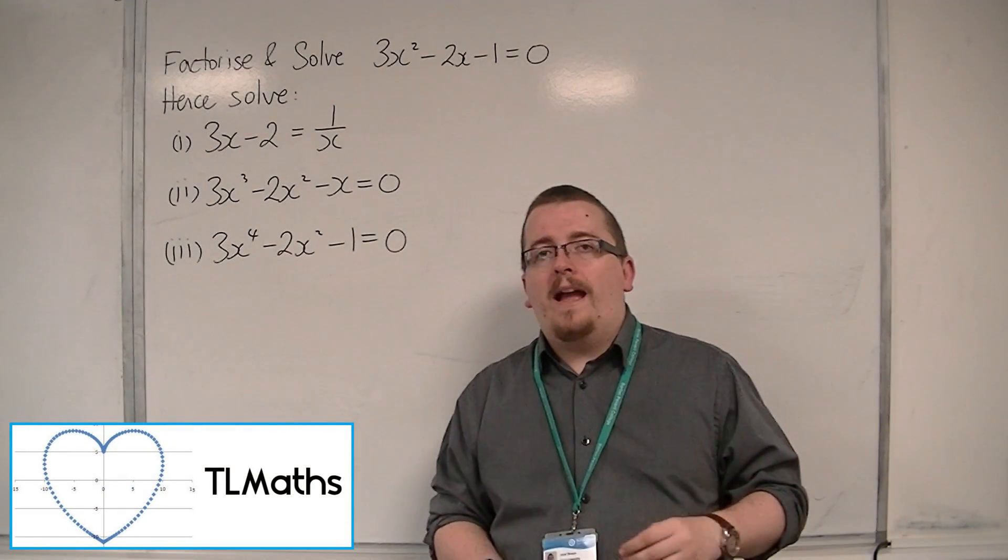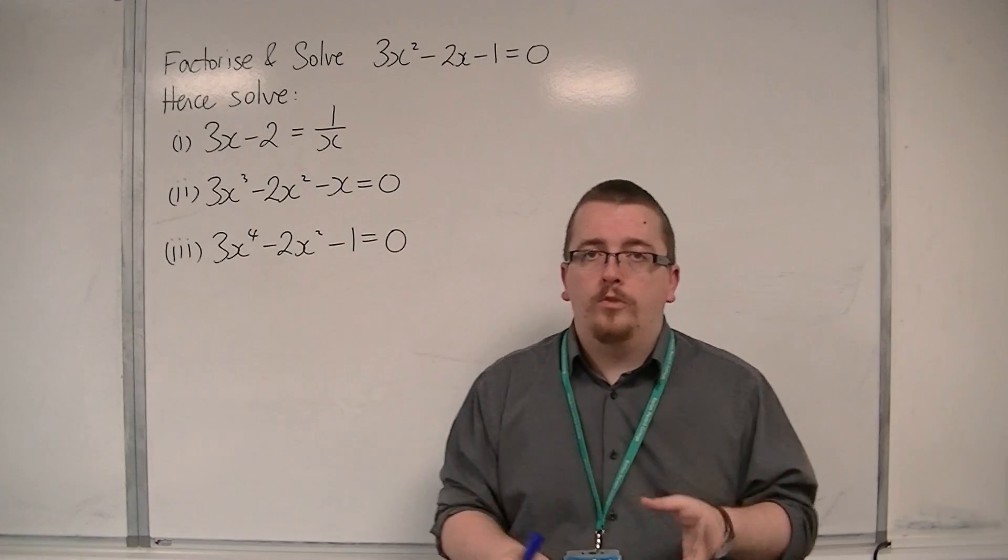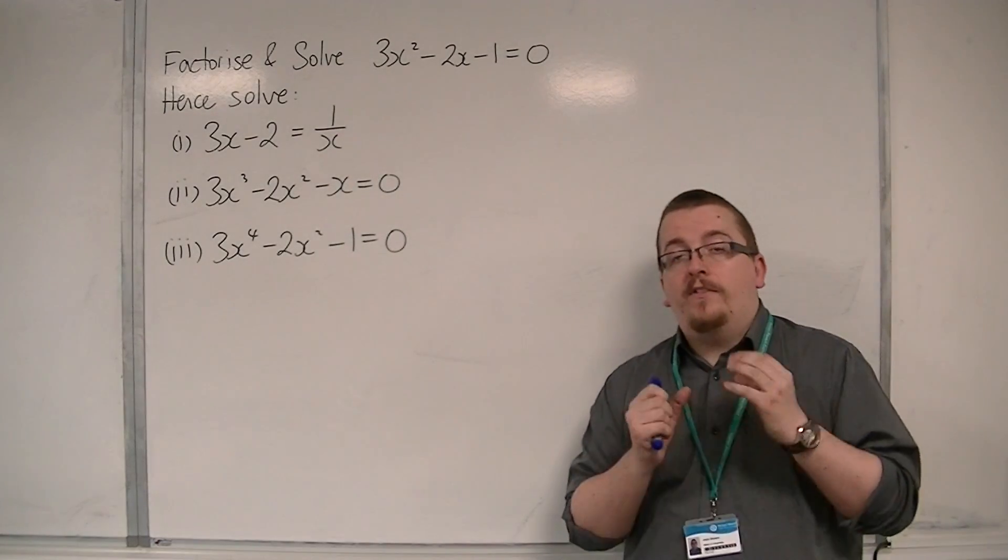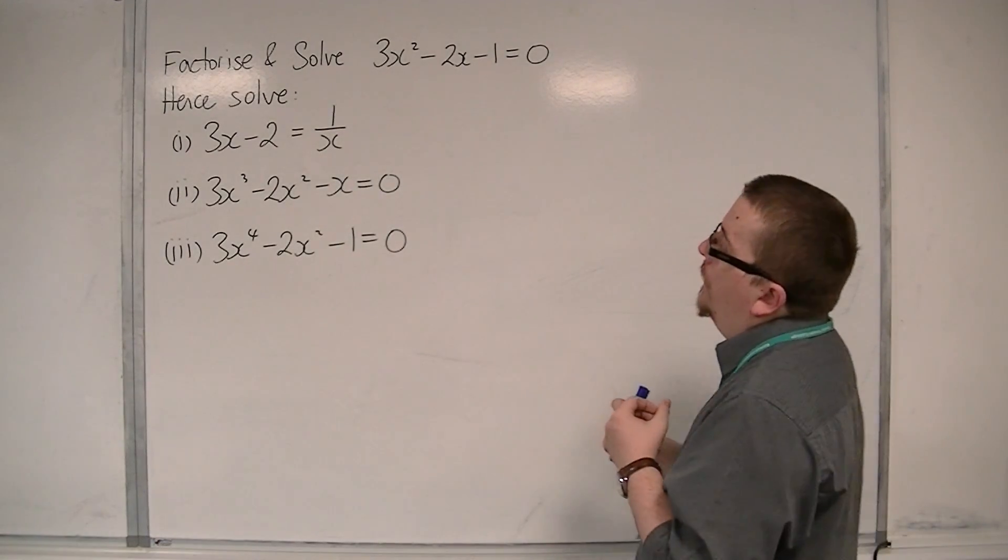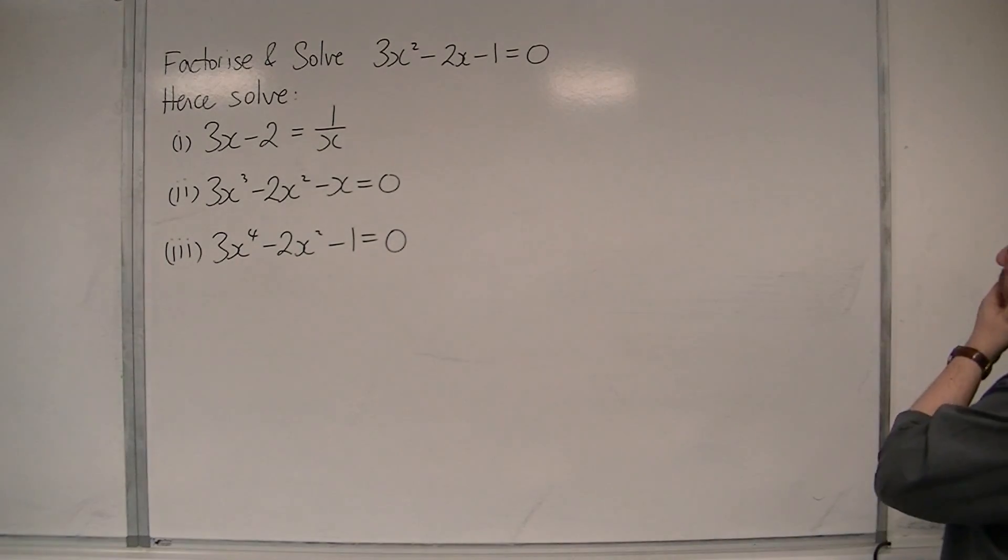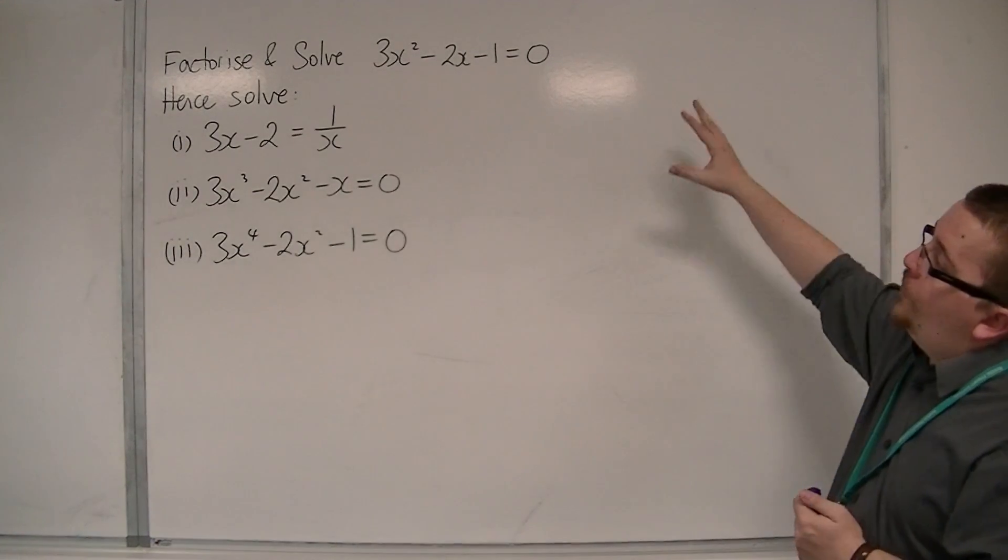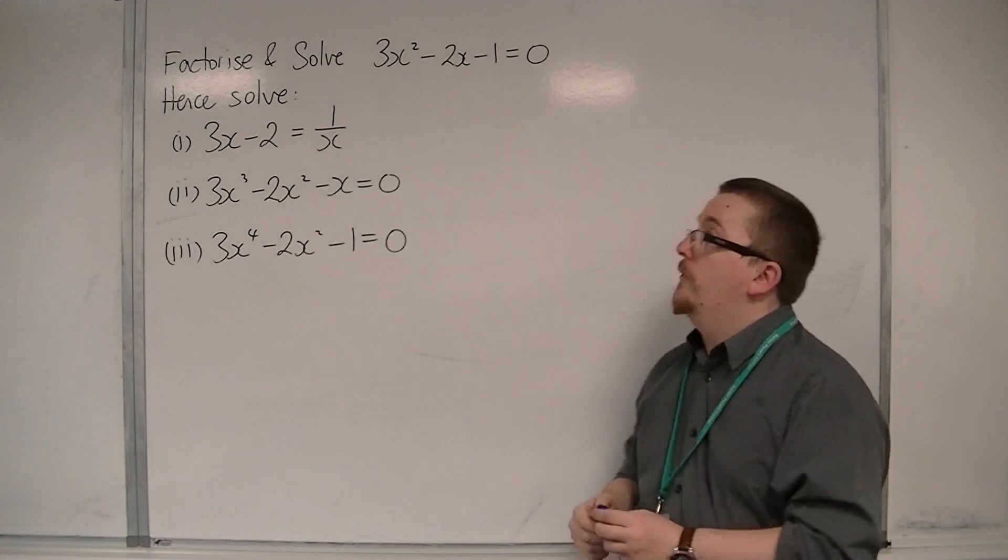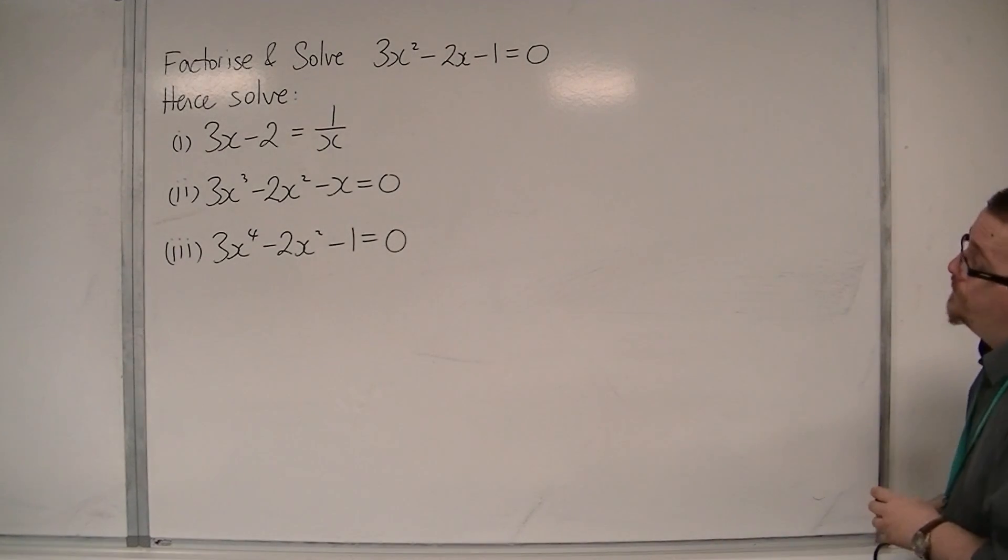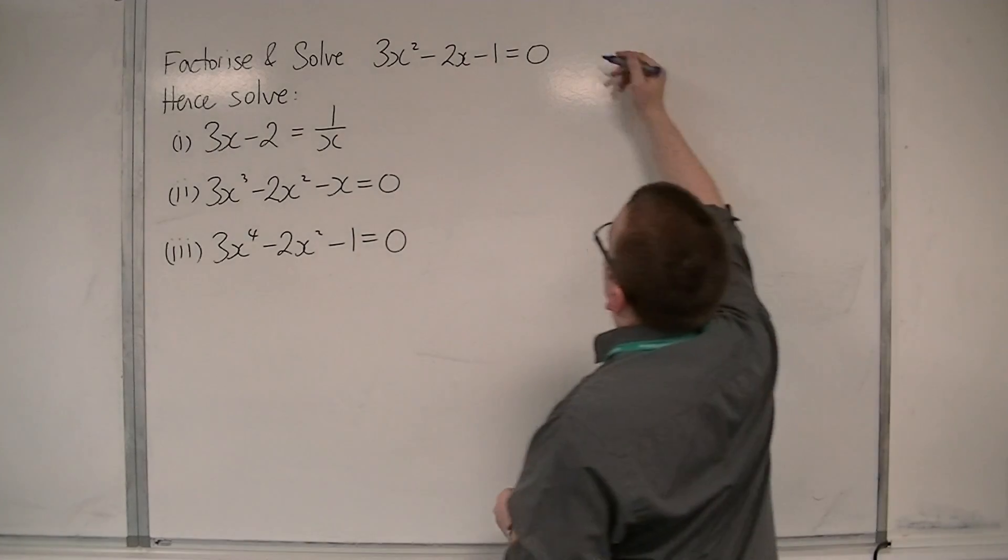In this video we're going to be looking at what I call hidden quadratics, or quadratics in disguise. What we're asked to do is factorise and solve 3x squared minus 2x minus 1 is equal to 0. So, that's what we're going to do first.